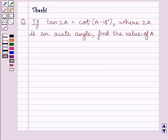Hi and welcome to the session. Let us discuss the following question. The question says, if tan 2A is equal to cot A minus 18 degrees, where 2A is an acute angle, find the value of A.